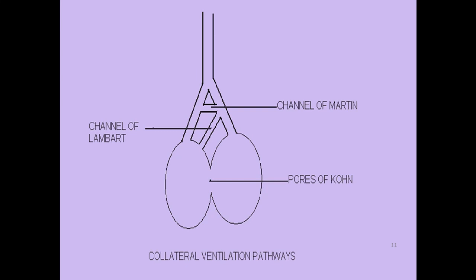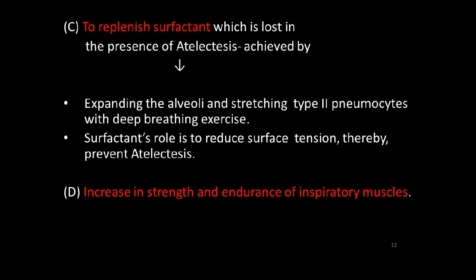In the image of collateral ventilation channels, you can see the channels of Martin — the interbronchiolar channel — channels of Lambert — the bronchoalveolar channel — and pores of Kohn — the interalveolar channel. To prevent atelectasis or replenish surfactant lost in atelectasis, this is achieved by expanding the alveoli and stretching the Type 2 pneumocytes with deep breathing. Surfactant's basic role is to reduce surface tension, thereby helping prevent atelectasis.